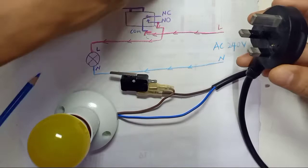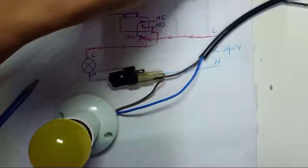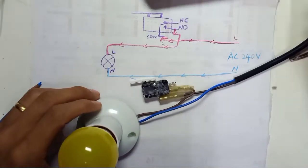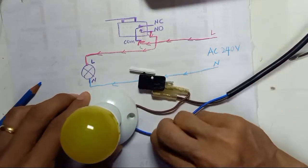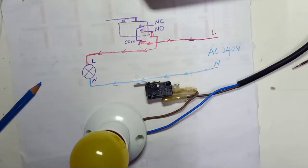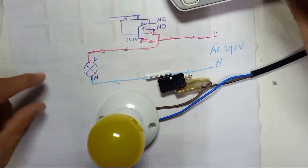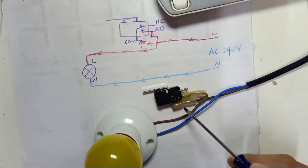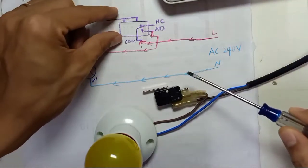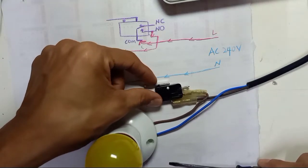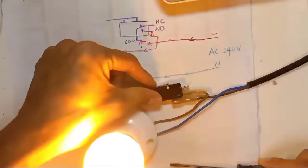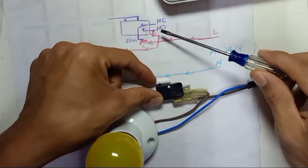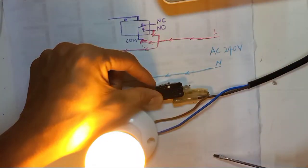Now I'm going to use the plug point. Turn on the main source. After turning it on, do not touch the switch because voltage is already supplied. Once we press the button the light will turn on. This is exactly the same function as a push-button switch. When you use normally open, press the button and the switch turns on; release it and it turns off.